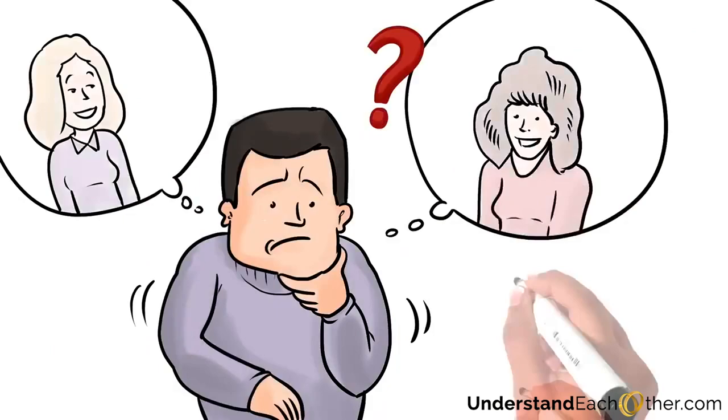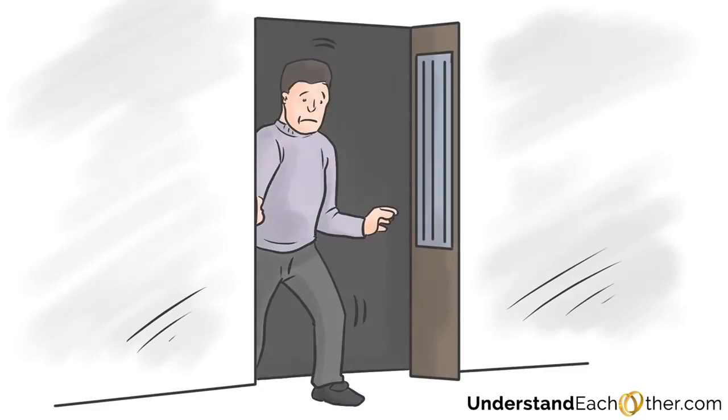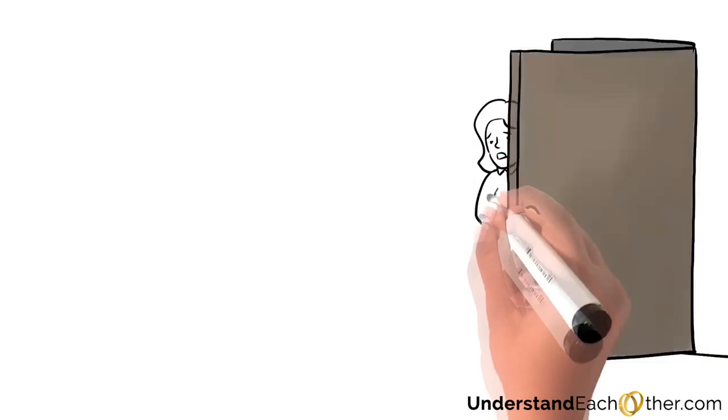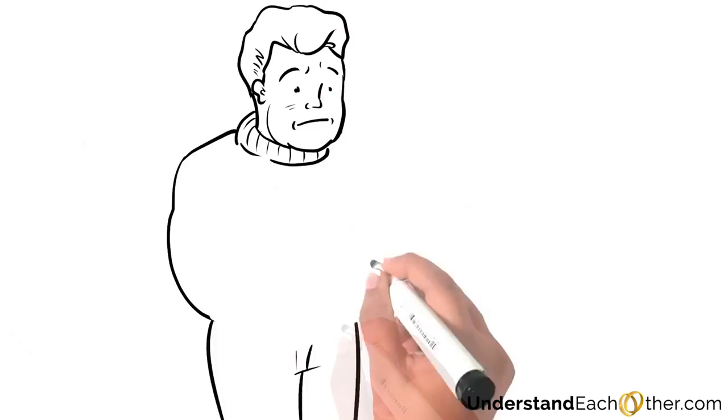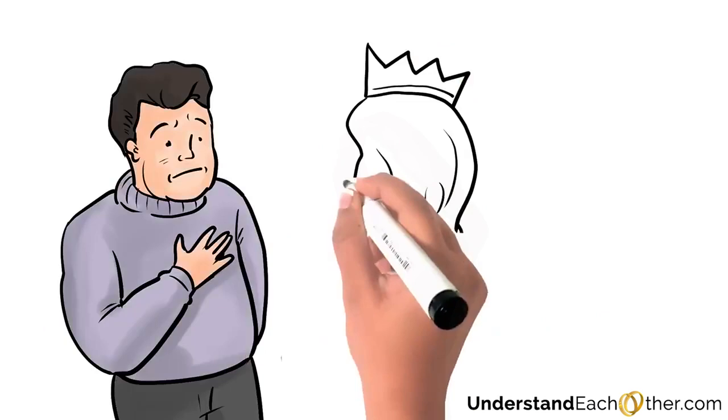The problem with a confused man is he doesn't know what he wants. Relationship is like a door. You're either in or out. A confused man will put one foot in and one foot out. People will think you have a perfect relationship while you're actually not sure where you stand. A confused man can be a wonderful guy who doesn't play games.